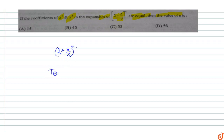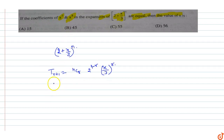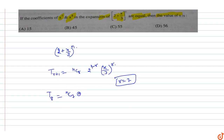So in this, the T(r+1) term will be nCr times 2 raised to power (n minus r) times (x/3) raised to power r. We need to find the coefficient of x raised to power 7. The coefficient of x⁷ will come by putting r equal to 7, giving us T8 = nC7 times 2 raised to power (n minus 7) upon 3 raised to power 7. This is the coefficient of x raised to power 7.